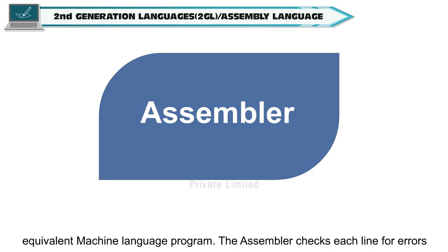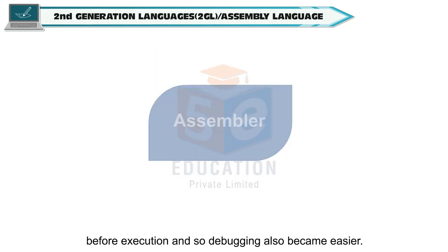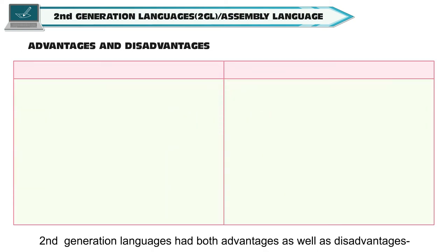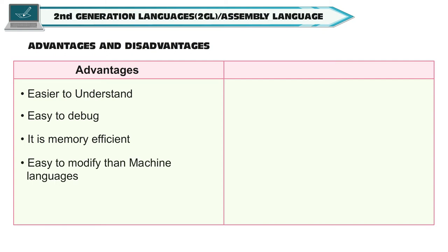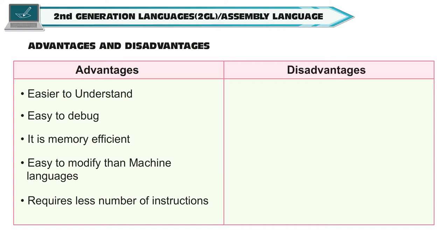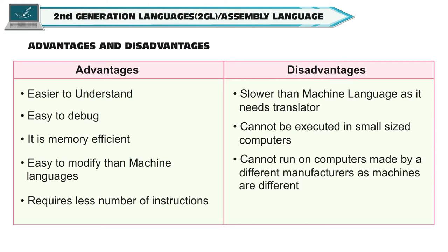The assembler checks each line for errors before execution, so debugging also became easier. Second generation languages had both advantages as well as disadvantages. Advantages are: easier to understand, easy to debug, memory efficient, easy to modify than machine languages, and requires fewer instructions. Disadvantages are: slower than machine language as it needs a translator, cannot be executed on small-sized computers, cannot run on computers made by a different manufacturer, and difficult to remember syntax.